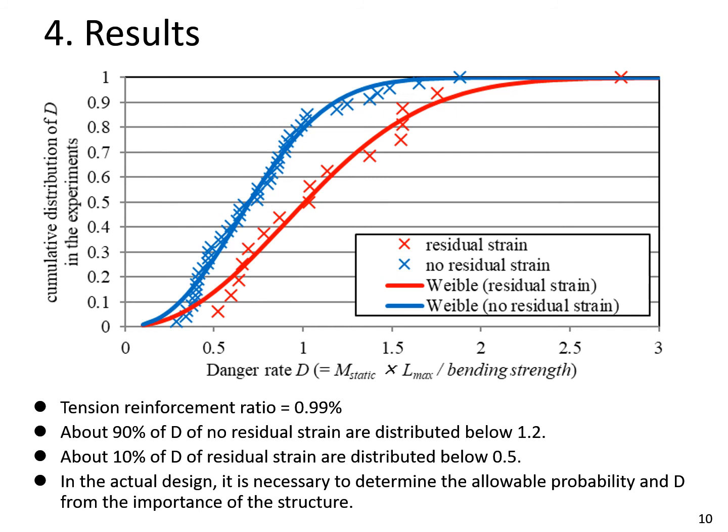This is the probability of D just in this experiment. The shape of the blue line doesn't change much in the range where D is large, and the shape of the red line doesn't change much in the range where D is small. About 90% of D of no residual strain are distributed below 1.2. About 10% of D of residual strain are distributed below 0.5.